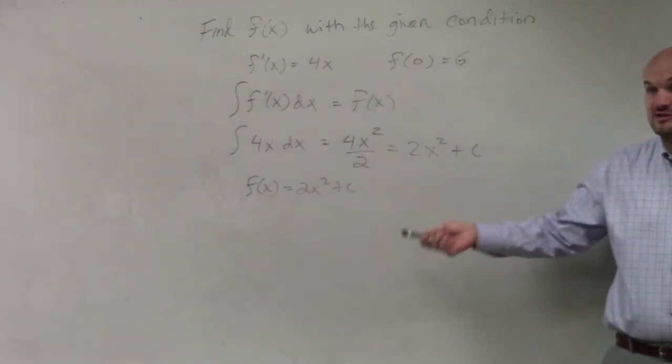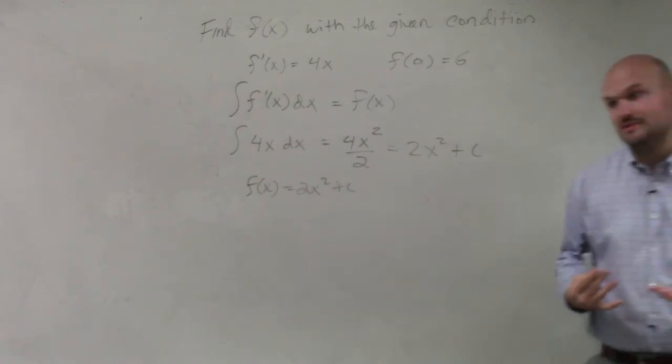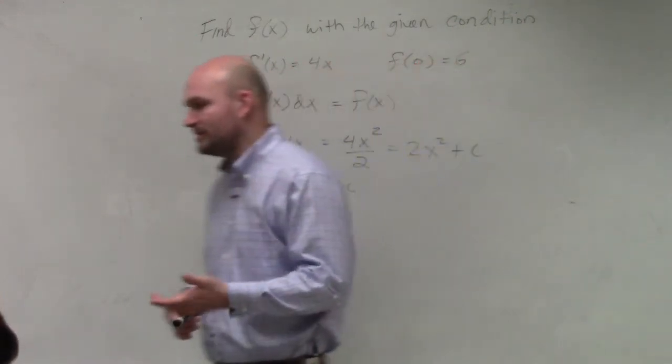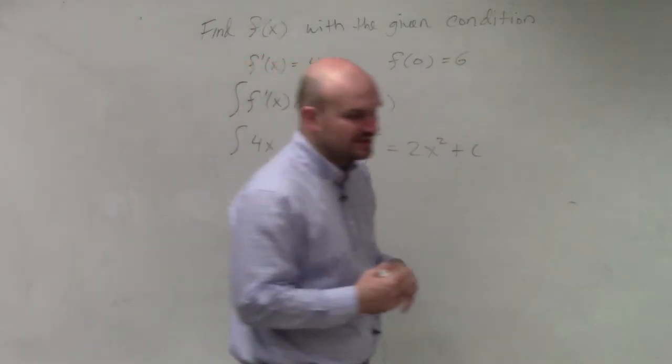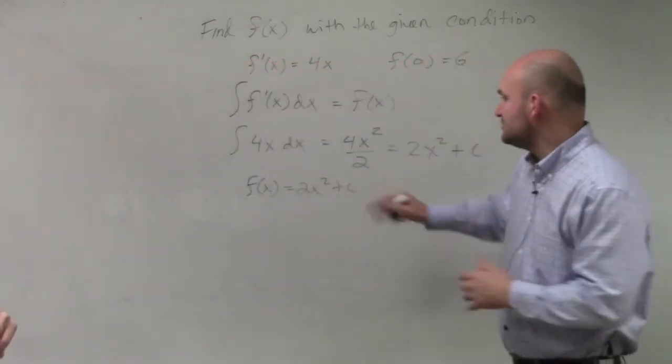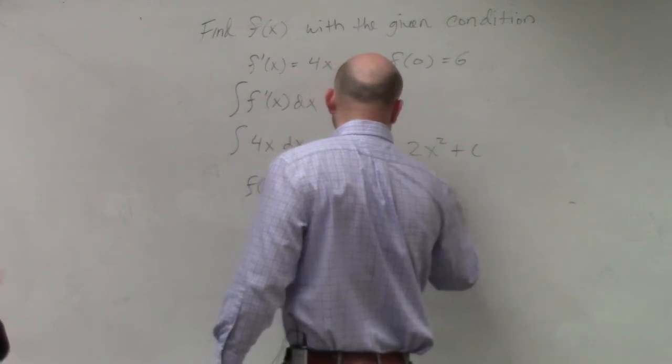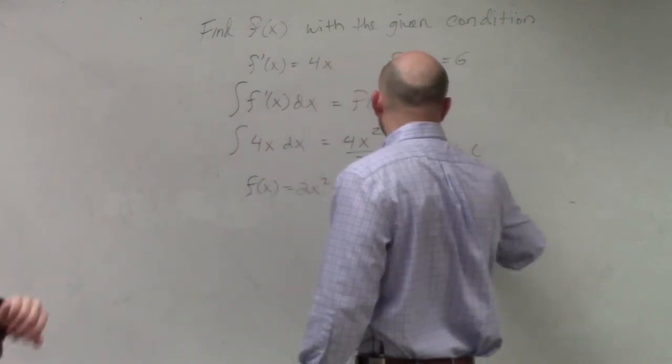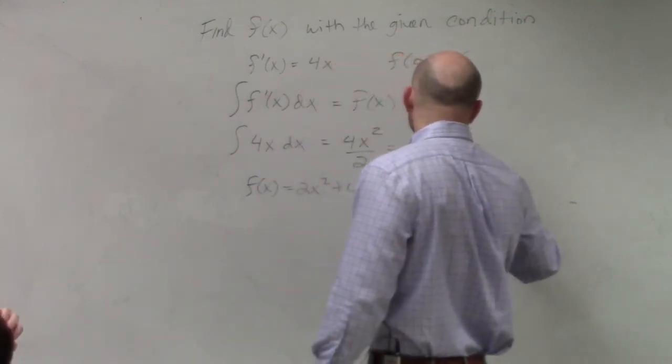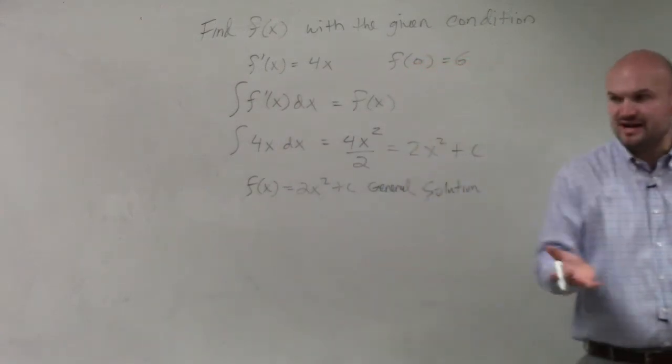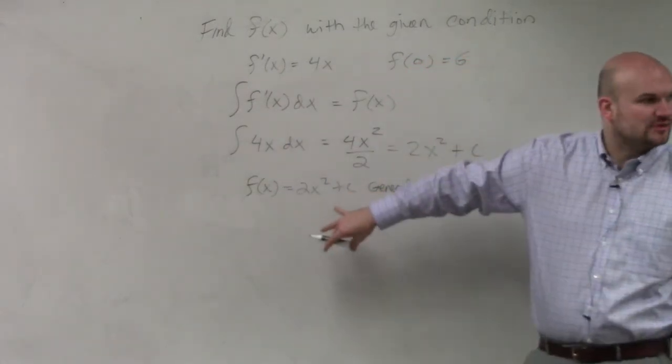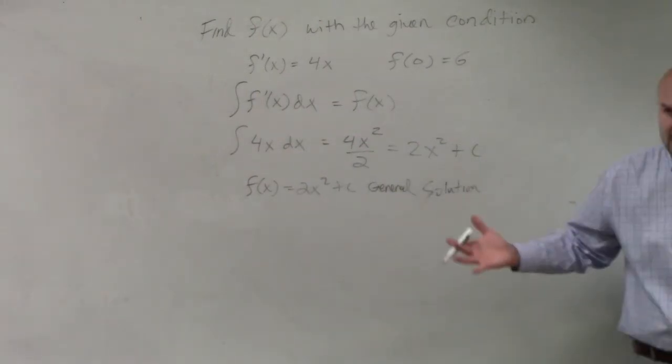But now we've got to enter in the new stuff, which was a challenge, which I didn't teach yet. So, basically what we're going to do now is this is what we call our general solution. And the reason why this is our general solution is because it's kind of vague. It's really dependent on the value of c.